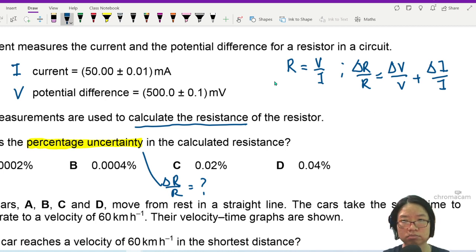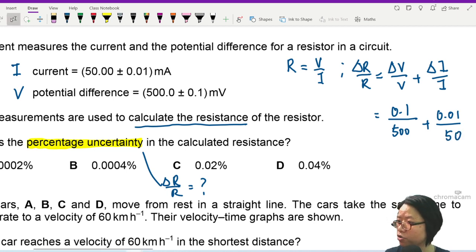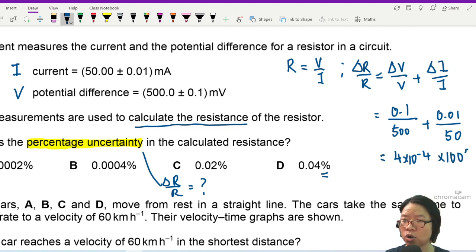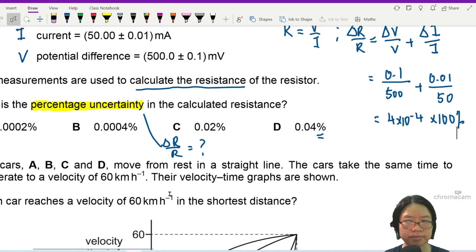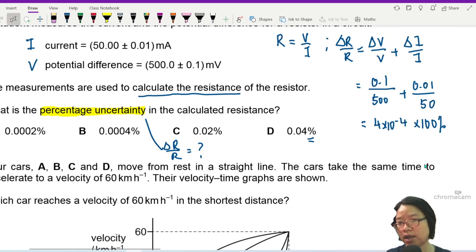So for this one, I'll just take 0.1 divided by 500 plus 0.01 divided by 50. These are really good measurements because they are digital measurements and if I press my calculator, this one I will get 4 times 10 to the power of negative 4. But all the answers are in percentage, so you should multiply by 100%. So multiply by 100% and this will give you 0.04%. So the answer is D.